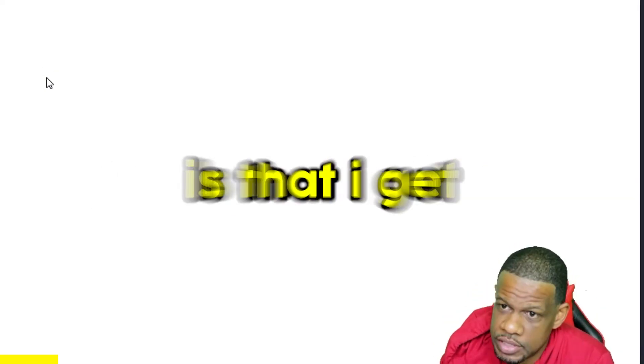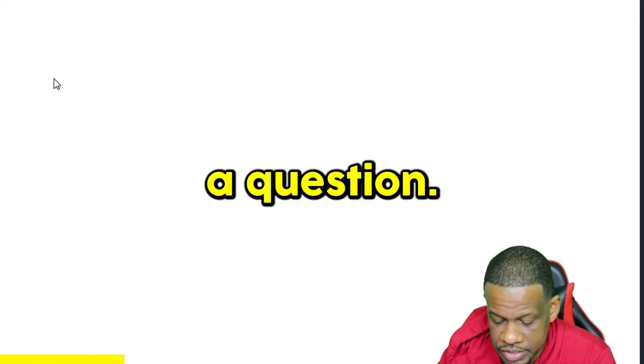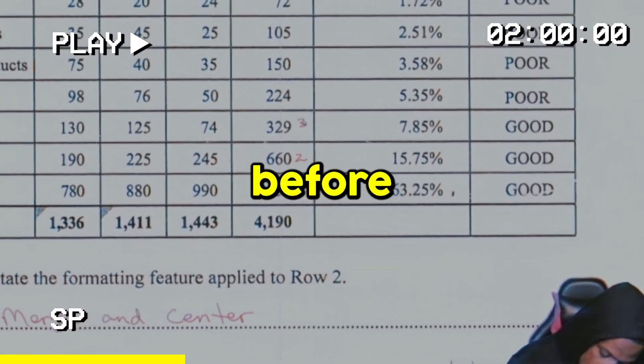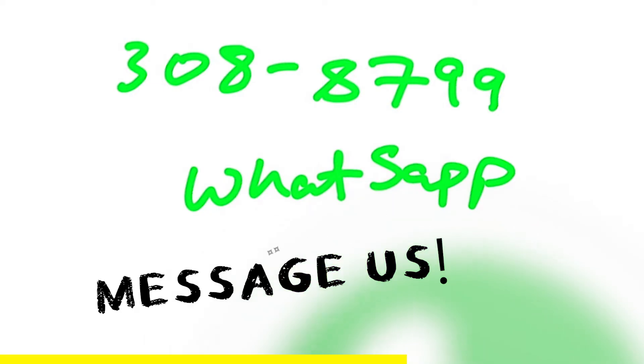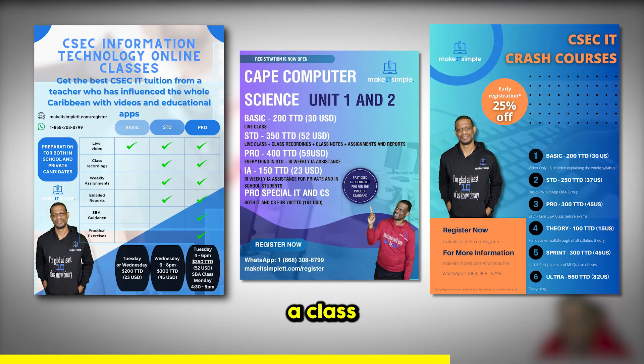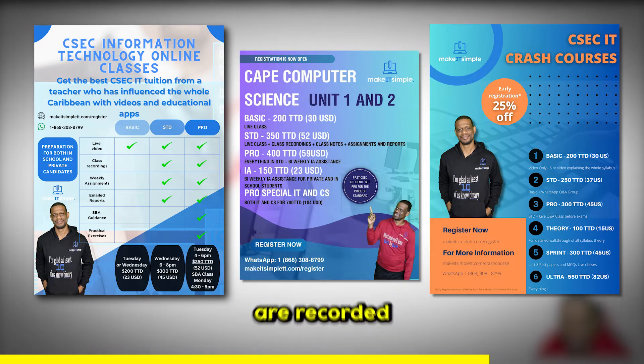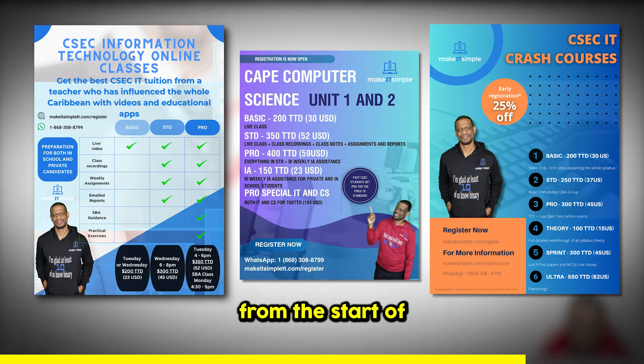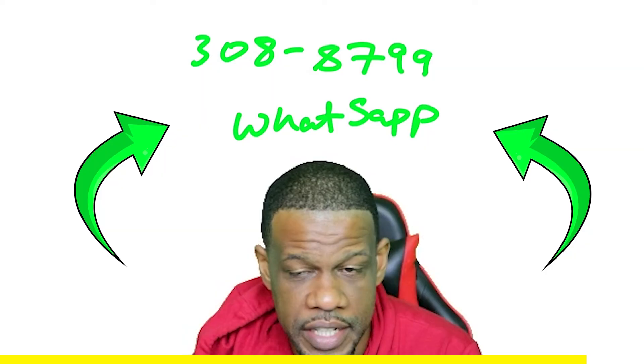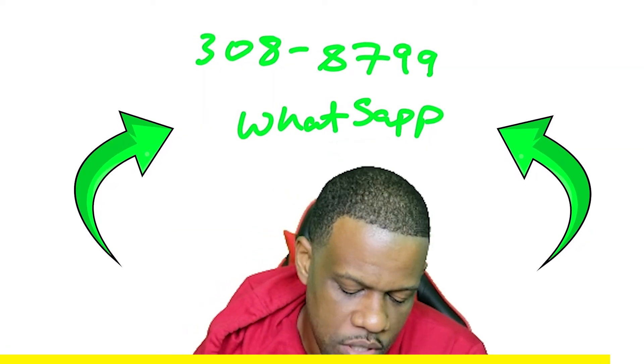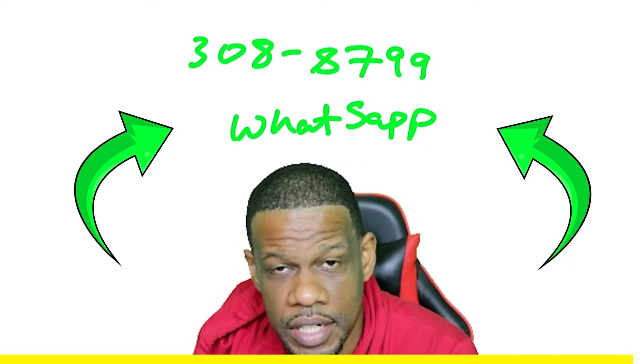Really, the coolest thing about these past videos is that I get to explain while doing questions, so a lot of you will learn things that you never saw before. But sometimes I can't explain every single thing, and you might need help explaining, so 308-8799, WhatsApp that and find out what we have available. It might be a crash course, it might be a class. Remember, when you join my classes, all of the classes are recorded, so you'll get to see every single thing that we did from the start of the syllabus. If you're not sure about certain questions, WhatsApp the number, see what we can do for you.